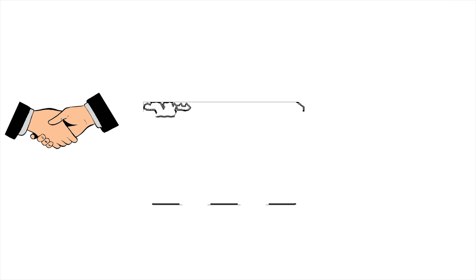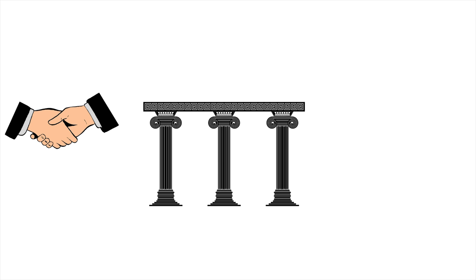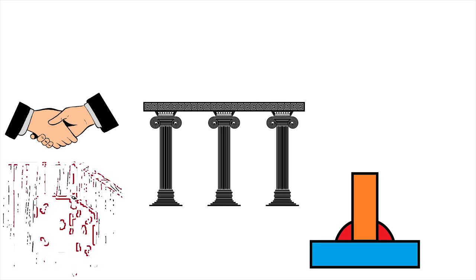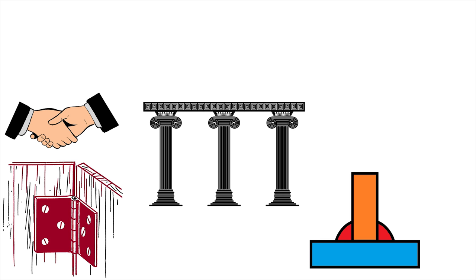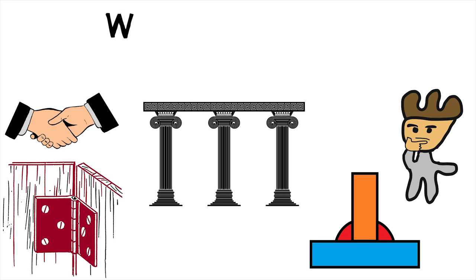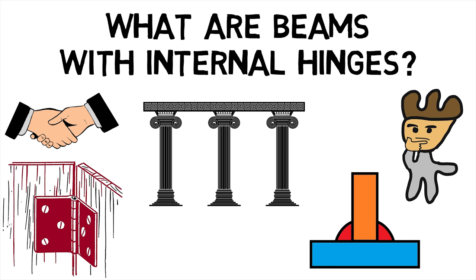Welcome back Mechanical AI. Did you know that two beams can be connected using a moment connection or a shear connection which are both internal hinges? This makes us wonder what are beams with internal hinges?